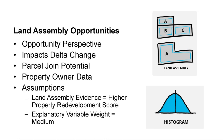Explanatory variable — land assembly opportunities: land assembly is where three properties become one, as shown in the sketch. This impacts the delta change because the future potential of the combined property can be much higher than three individual properties. We need to look at property ownership data for parcel join potential. My assumption: if there is evidence of land assembly taking place in a geography, those properties would have a higher property redevelopment score. Variable weight: probably medium.